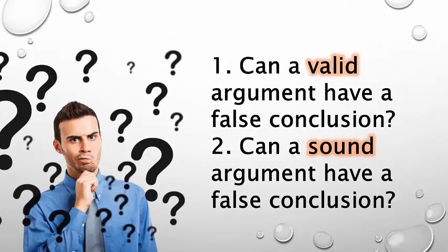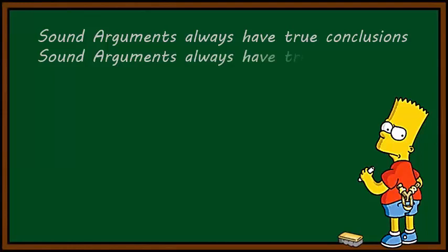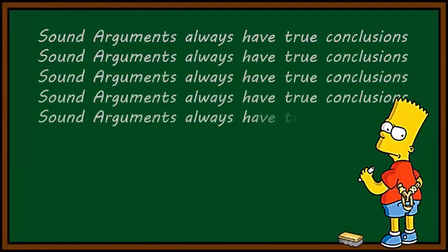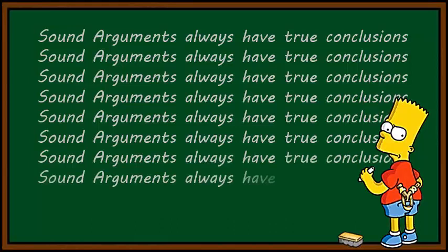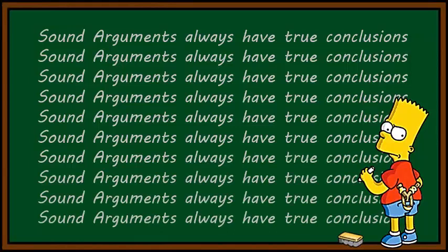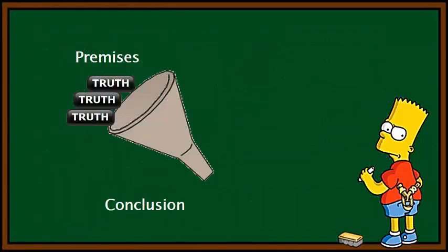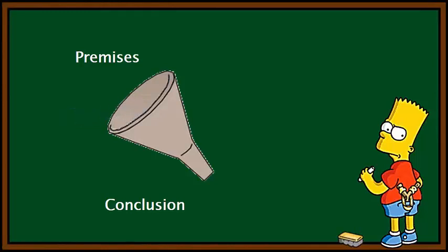Here's a question: can a valid argument have a false conclusion? A valid argument, yes, can have a false conclusion — just in case it has false premises to start with. But can a sound argument have a false conclusion? No, it cannot. Sound arguments always have true conclusions, so be careful not to call an argument sound unless you've looked at that conclusion really carefully. Sound arguments always have true conclusions because of two factors: the premises are true, and the structure of the argument is such that truth of the premises will be funneled down into the conclusion. Together, those two points guarantee that sound arguments will always have true conclusions.